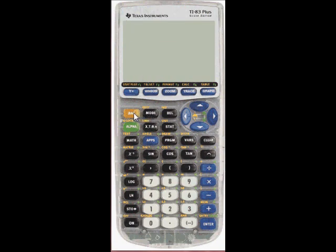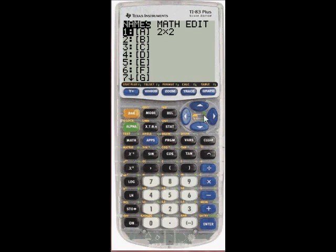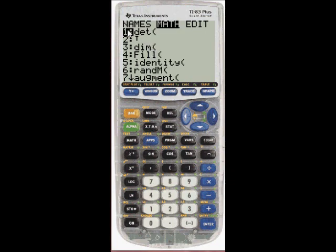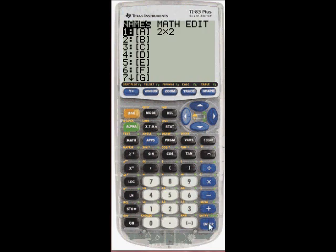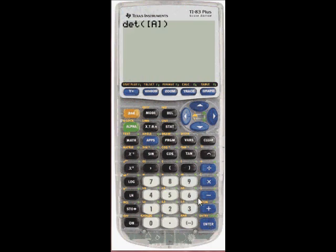And let's say I want to take the determinant of that matrix I just created. Go back into the matrix editor. Scroll down. Oh, it's actually the first one in the math menu. Determinant. I'll press enter. Go back and find my matrix A. Press enter. Close parenthesis. And the answer is one. And that's a rundown of the TI-83 calculator.